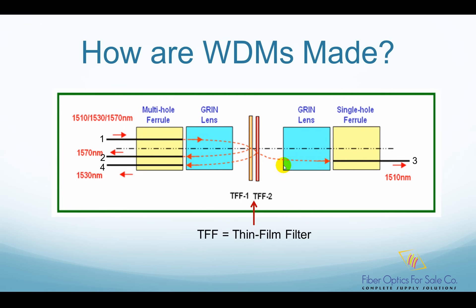So how are WDM devices made? This picture shows a three-channel WDM device based on thin film filters. Thin film filters are a piece of flat surface glass with optical coatings on it. The optical coatings are designed to pass and reflect certain colored lights.